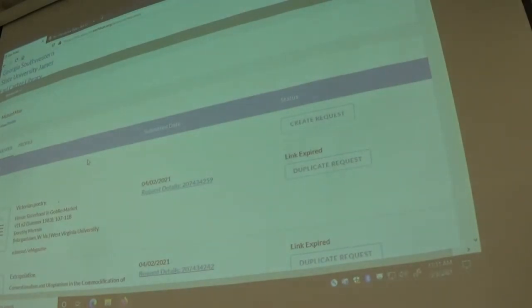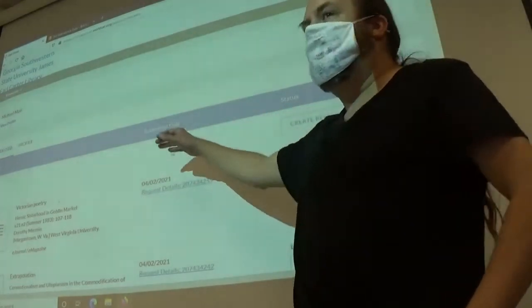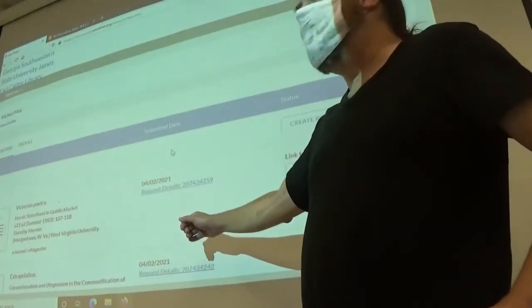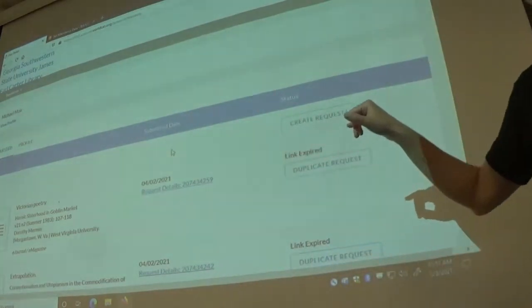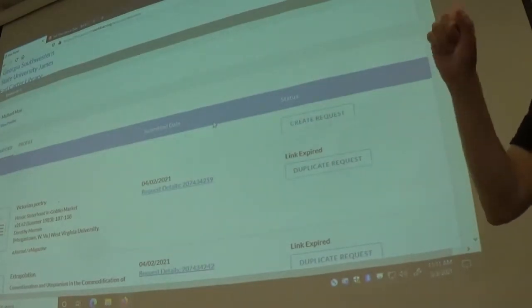If you're at home you may need to log into it using your regular GSW credentials, but if you're here on campus it'll probably just log you in automatically. It'll take you to a page that looks like this where the articles you order will appear. You'll get links to a PDF of the article you request and they'll send you emails when the article has arrived. It usually takes about 24 hours unless it's something obscure.